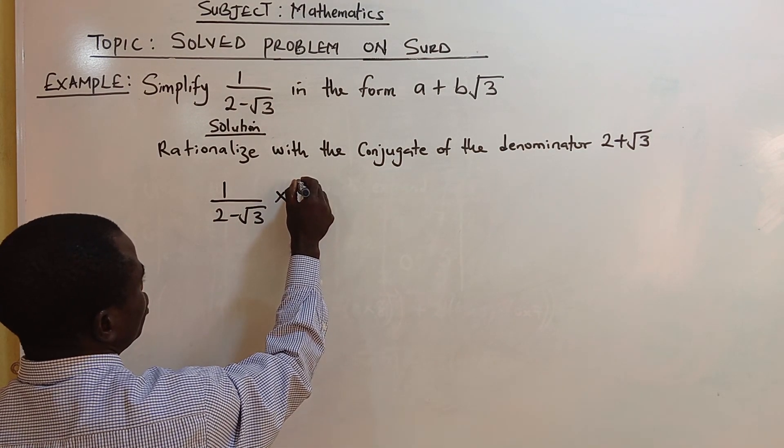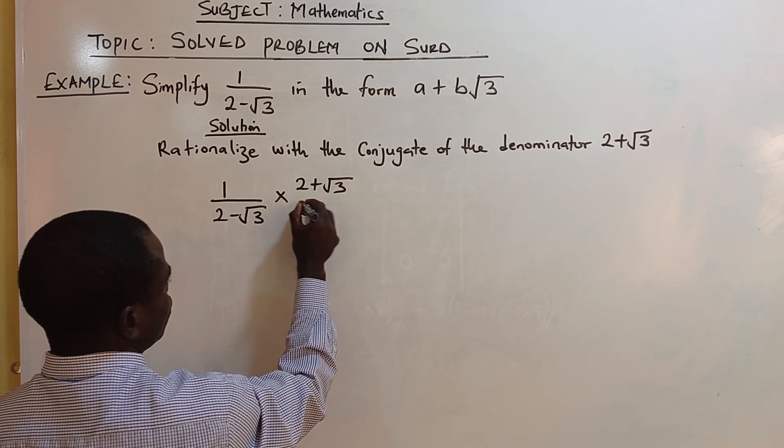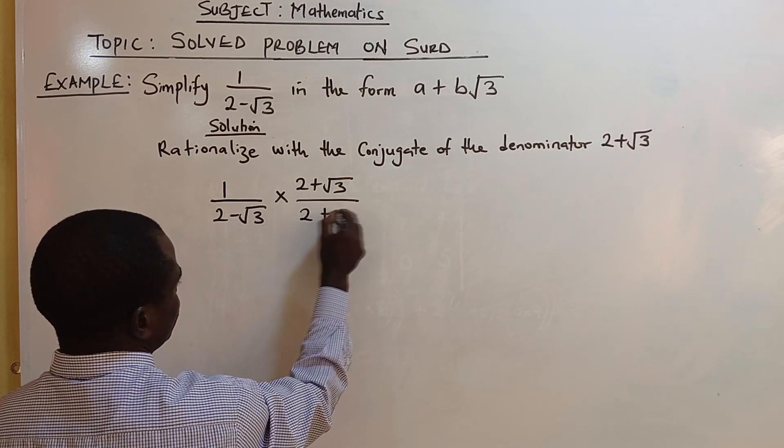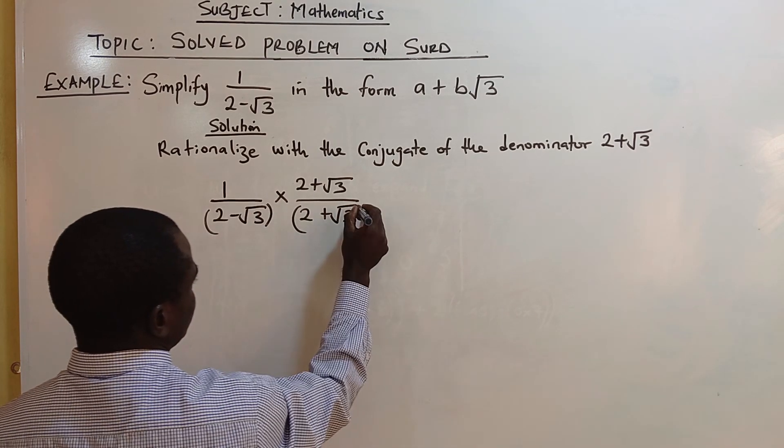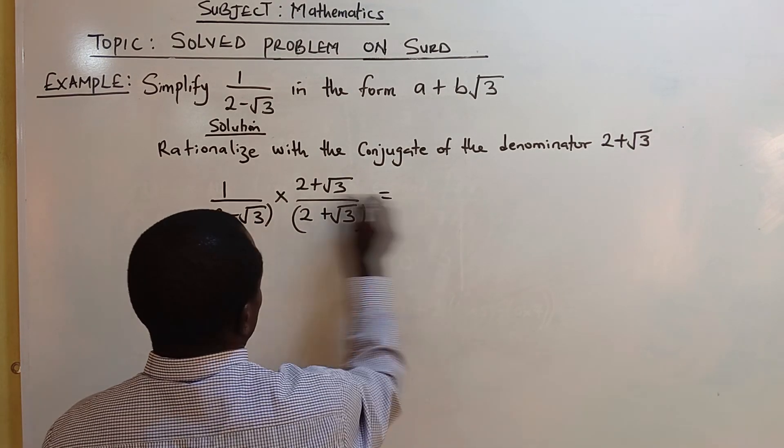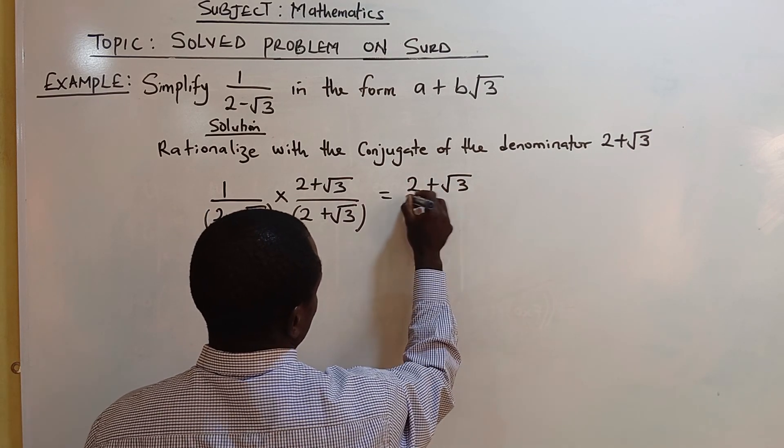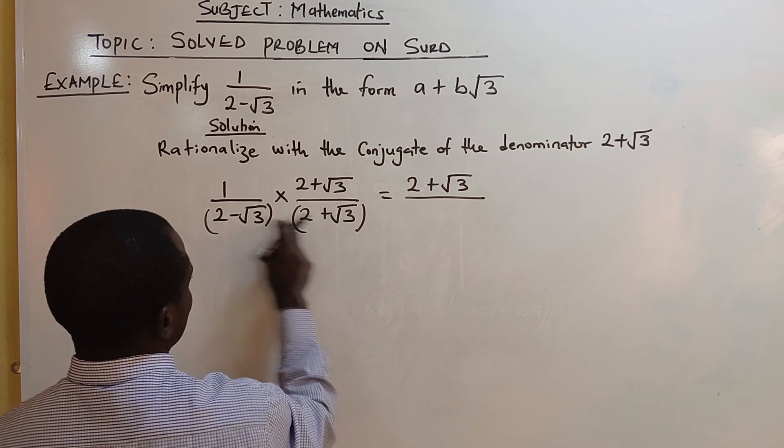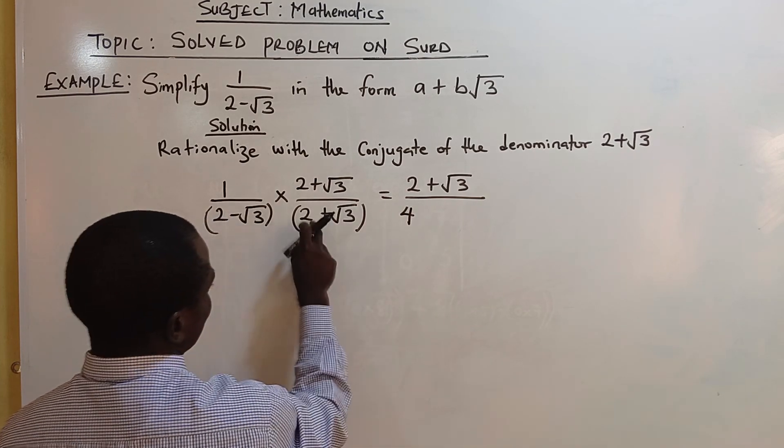Rationalize means you multiply the numerator by changing the negative to positive. Now 1 times this you have 2 plus root 3. Now 2 times 2 you have 4, when you multiply this...